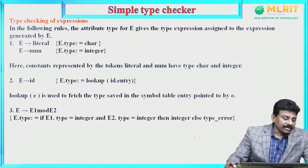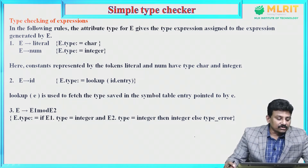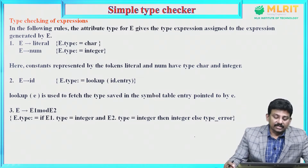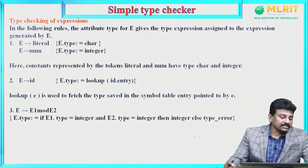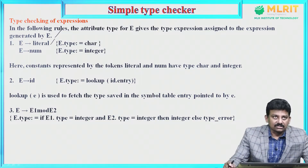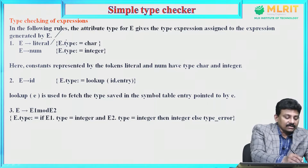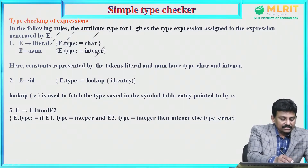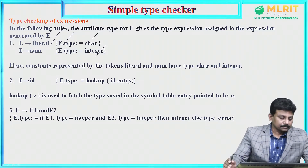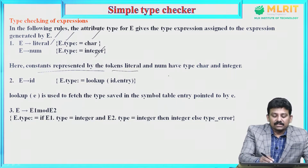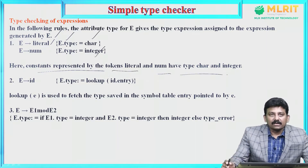Then, type checking of expressions. In the following rules, the attribute type for E gives the type expression assigned to the expression generated by E. For example, E derives literal — literal is any character or constant — so E.type = character. E derives num — E.type = integer, since number means integer. Constants represented by tokens: token literals and num have type character and integer respectively.